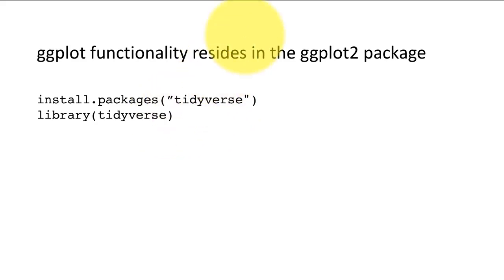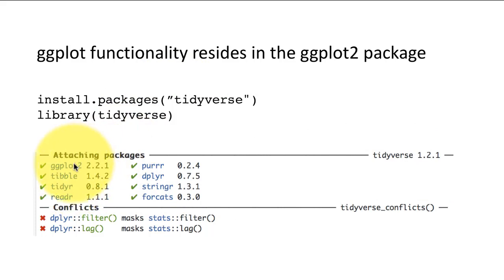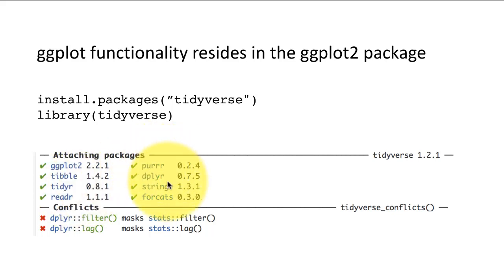When you load the tidyverse package, you will see this result printed on your console. Sometimes people think these are error messages — they're not, this is just informational. It's showing you that the tidyverse package actually consists of all these following packages: ggplot2, tibble, tidyr, readr, purrr, dplyr, stringr, and forcats. We'll be using quite a few of these packages, though not all of them.